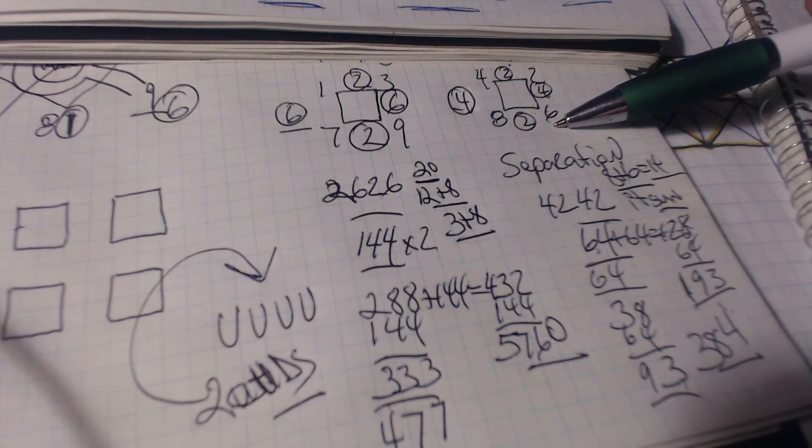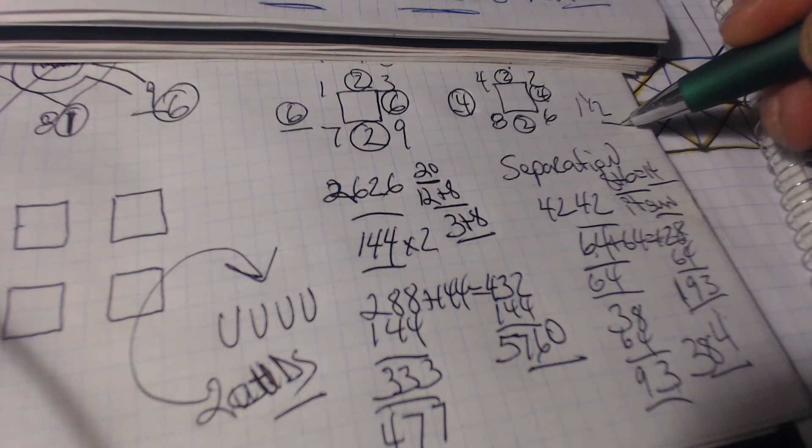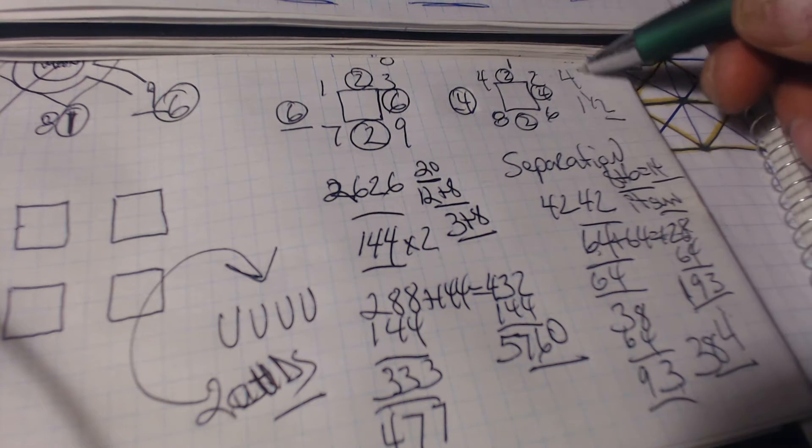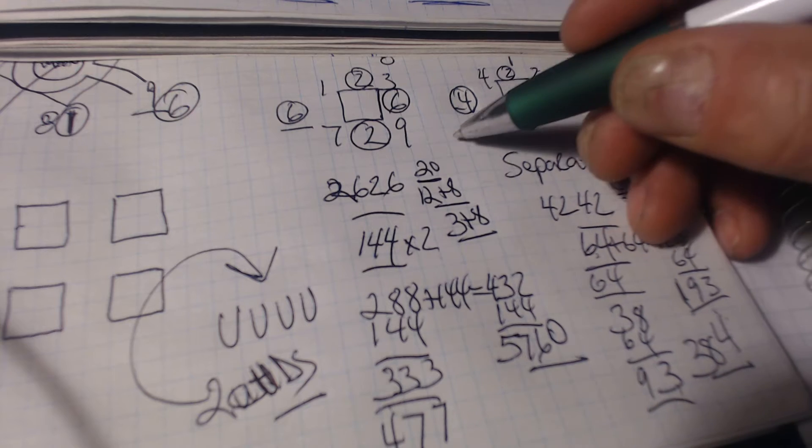But how do we do this? 4 over to 6 is only 1 and a half times. 2 over to 8 is 4 times. 1.5 and 4. Well, let me show you how we do that.